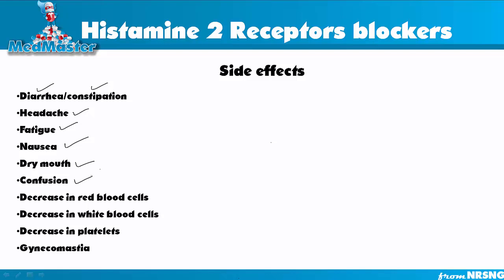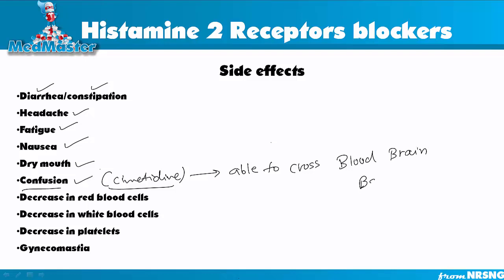The confusion side effect is caused by only one drug in this class: cimetidine. The reason this medication causes confusion is that it is able to cross the blood-brain barrier, whereas the rest of the medications in this class cannot. An easy way to remember this is that cimetidine starts with 'C' and it causes CNS side effects — specifically confusion.